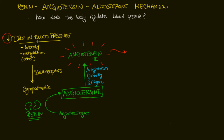The first thing that angiotensin 2 is going to do is vasoconstriction. The smooth muscles in the walls of the blood vessels are going to constrict, decreasing the diameter of the blood vessel. When the blood vessel diameter decreases, this is going to increase blood pressure, because the blood has a narrower diameter to pass through.